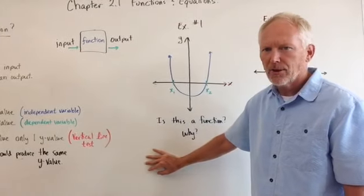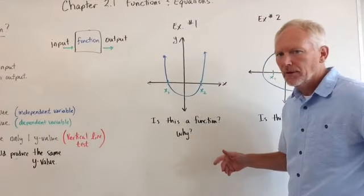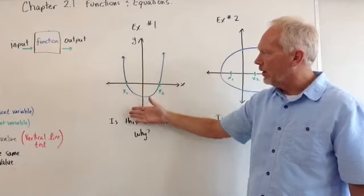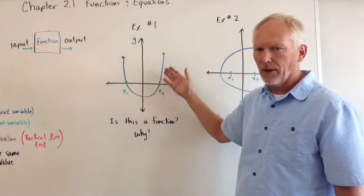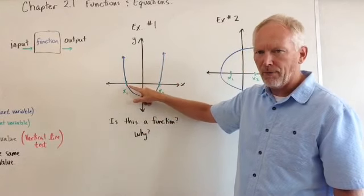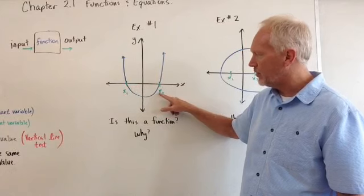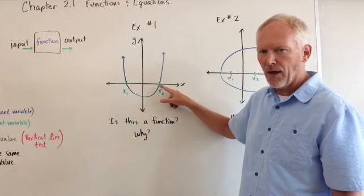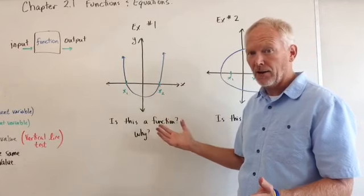Now let's look at some graphs. Here we go. An example. Here's a classic graph. Example number one. Classic parabola. Some x value is producing some y value. Another x value, x sub 2, producing the same y value on the x axis. Is that allowed?